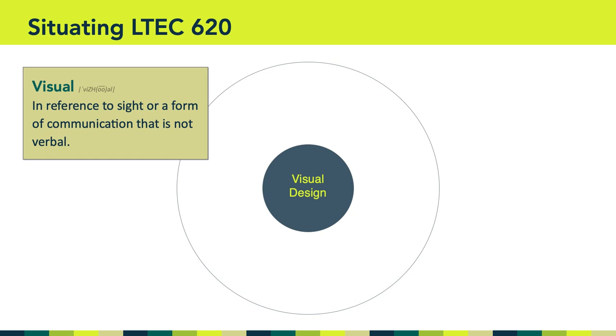Of course, the word visual, used as an adjective, suggests a reference to sight. That means something is visual or visible — it is perceivable by the eye.